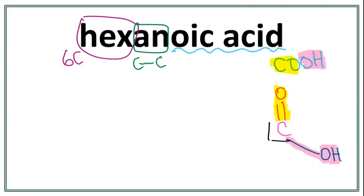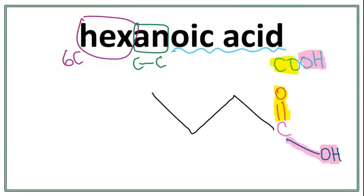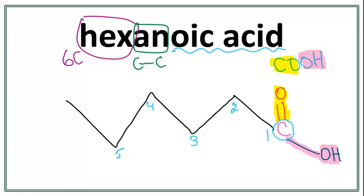We will start drawing from this carbon here because this is our first carbon. 1, 2, 3, 4, 5. Let's number these carbons: this is our first carbon, second carbon, third carbon, fourth carbon, fifth carbon, and the sixth carbon.